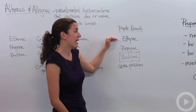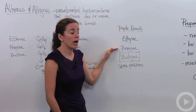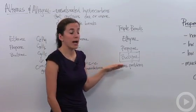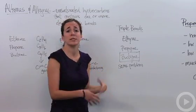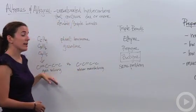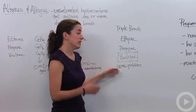So if it has two carbons, it's ethyne. Three carbons is propyne. Four carbons is butyne. And again, when you get to butyne, you start dealing with the same issue that you had in alkenes and butenes.